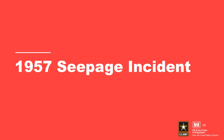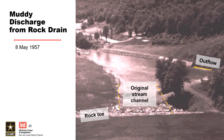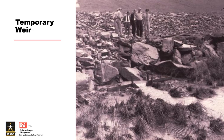The next seepage incident occurred in 1957. On May 8, 1957, the dam tender reported muddy water flowing from the rock drain at the downstream toe of the dam in the original stream channel. He reported that the discoloration had been observed a week earlier, but the flow now appeared to be increasing. On May 9, a temporary weir was constructed to measure flow, and by the next morning flow had increased significantly. A partial drawdown of the reservoir level to 30 feet below summer pool was ordered.